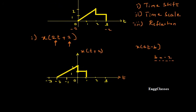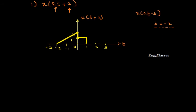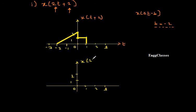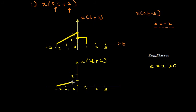Once the shift is done, the next task is to scale it by 2. Let me consider the same axes. I will now call this signal x of 2t plus 2. The limits remain the same — from minus 2 to plus 1. For the scaling by 2, since the scaling factor a equals 2 and it is greater than 0, I need to divide the amplitude by 2.